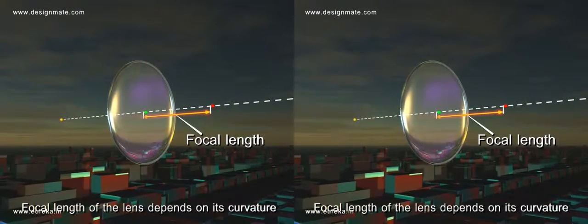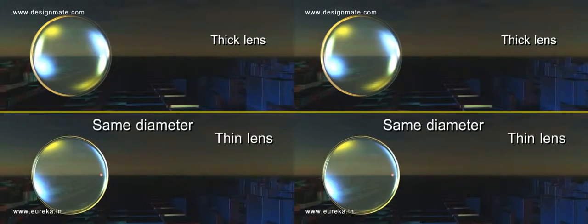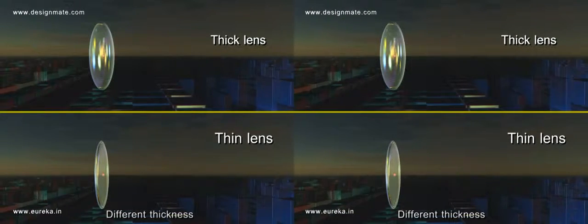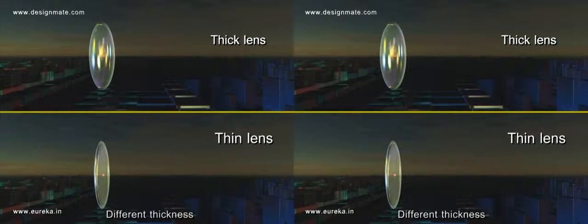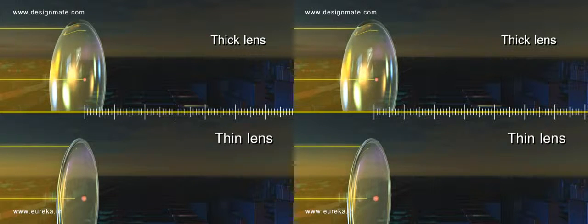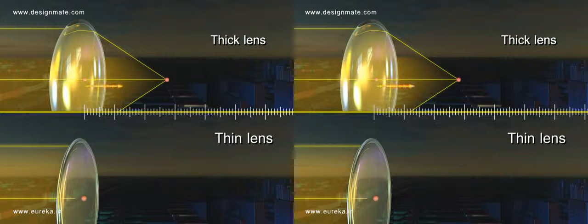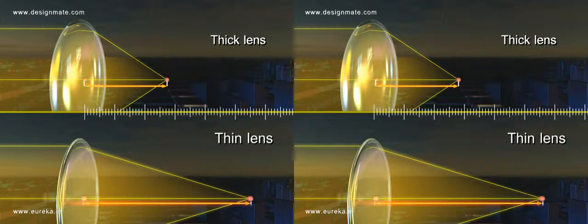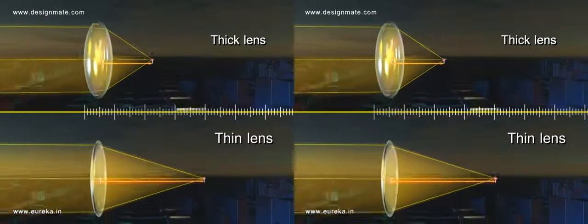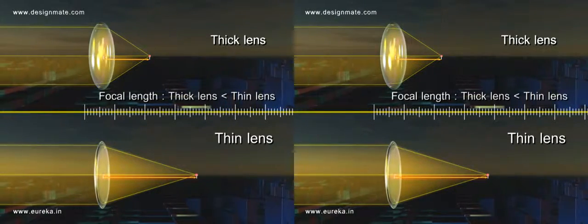The focal length of the lens depends on its curvature. Take two lenses of the same diameter but of different thickness and hence different curvature. When parallel light rays are incident on them, the light rays passing through the thick lens undergo more refraction and converge at a shorter distance compared to the thin lens. So the thick lens has a shorter focal length than the thin lens.